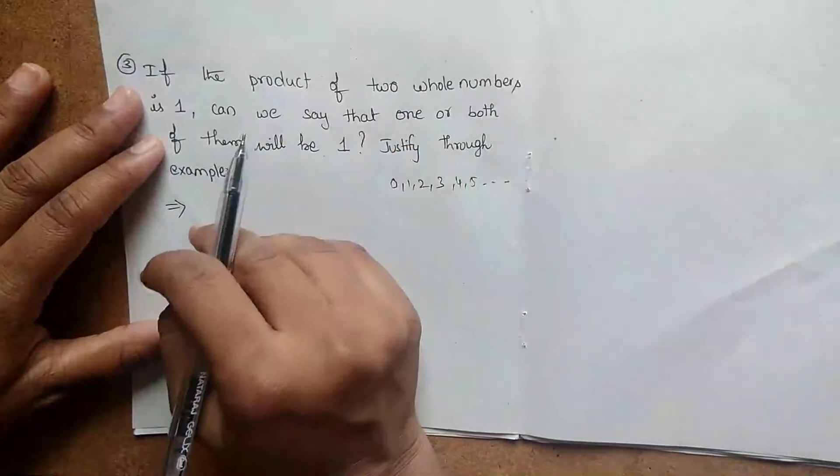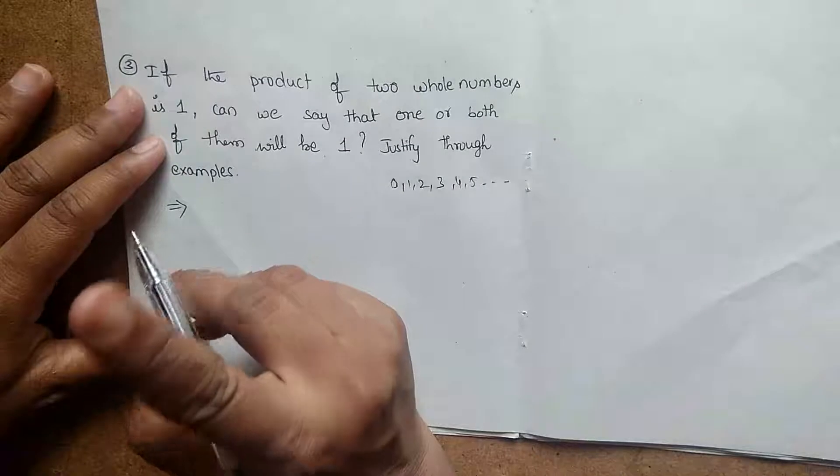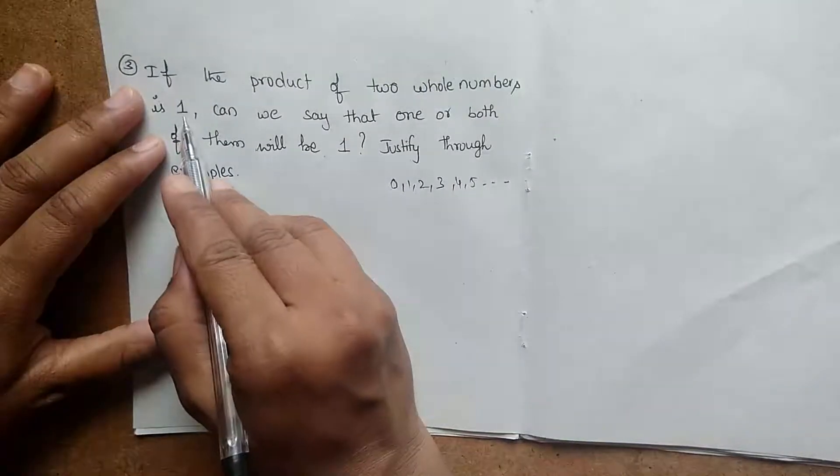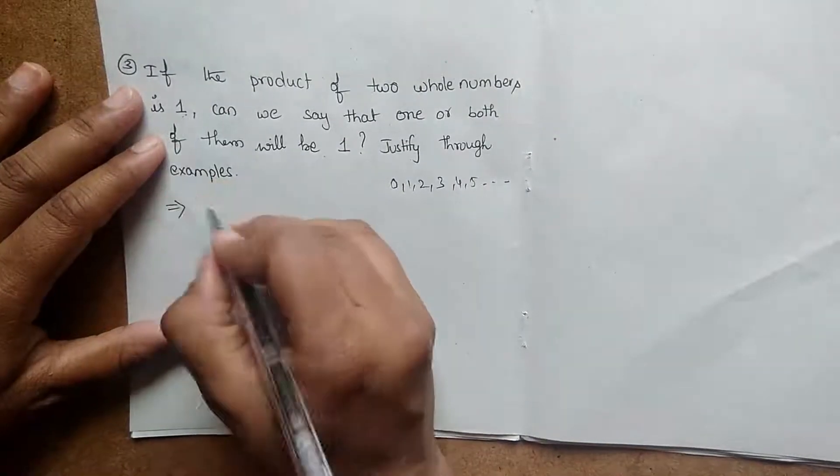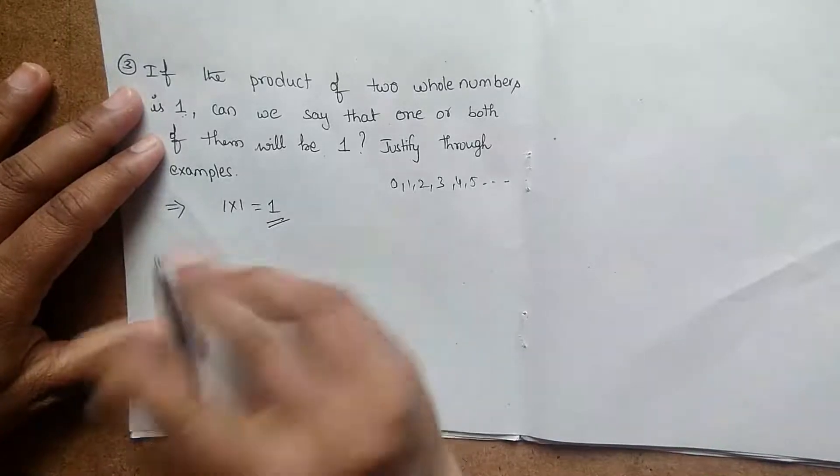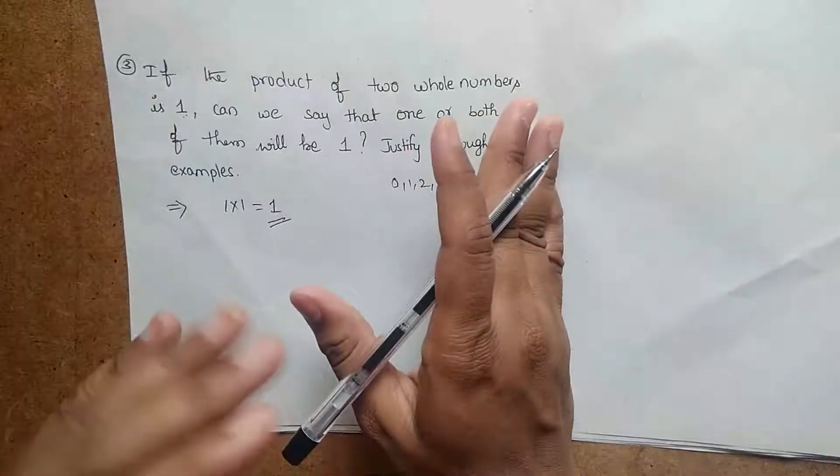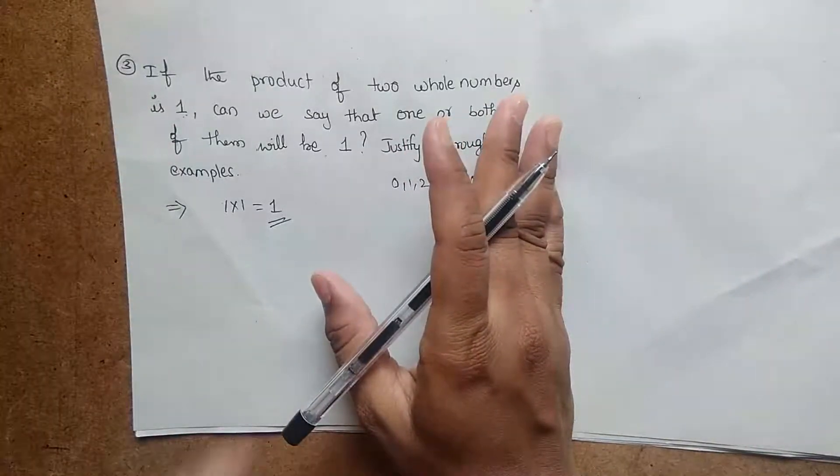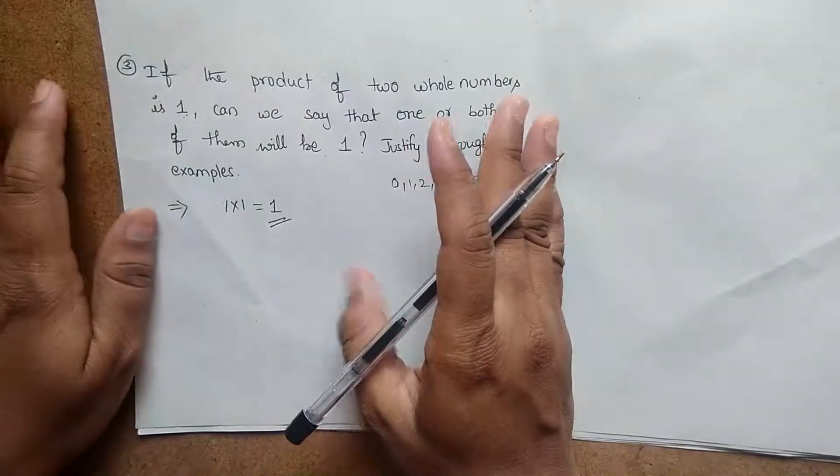We know all tables. 1 is the one answer. The product of two numbers is 1, it is 1 into 1, so we get 1. 1 into 1 equal to 1 is known in the tables we study.